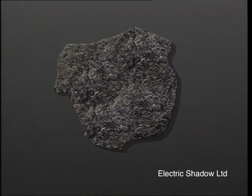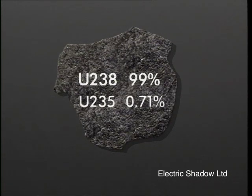Natural uranium consists largely of two parts. 99% is uranium-238 and less than 1% is uranium-235.